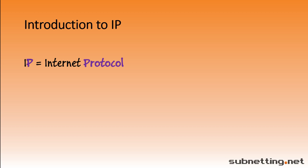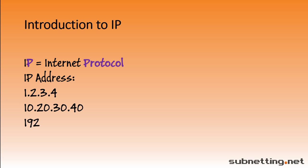In order for devices to communicate across networks or over the internet, each device needs to have an IP address. Here's an example of what some IP addresses look like. Notice each of these IP addresses has four numbers separated by periods. Each number is called an octet. Oct is for eight, and it's called that because each number is made up of eight bits.